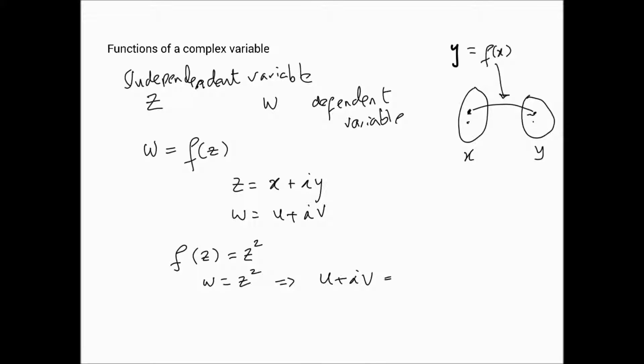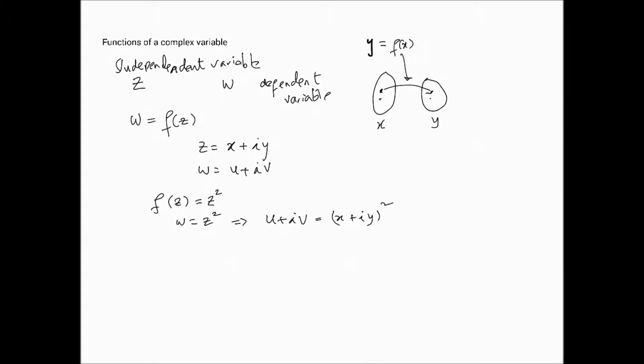So, to start with, things we need to know, for instance, are as follows. So, f of z is equal to z squared, which would mean that w is actually z squared. And of course, that would imply that u plus iv is, in fact, equal to x plus iy squared, because z is that.